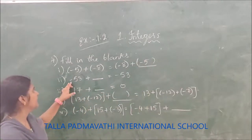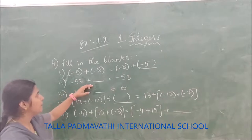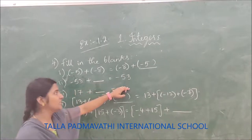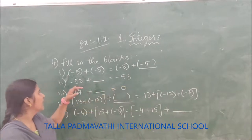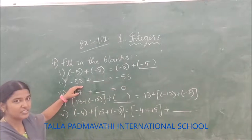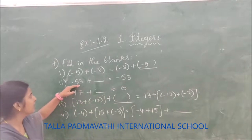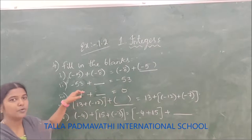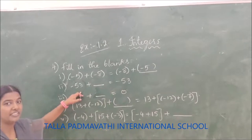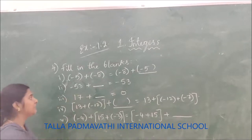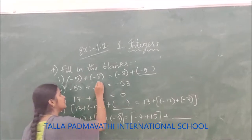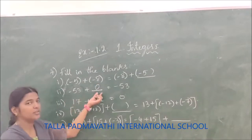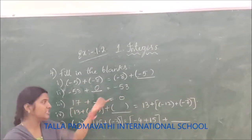The second one: minus 53 plus dash equals minus 53. You have to put an integer so that you get the same integer back. This is the property of additive identity. Additive identity is zero. So minus 53 plus 0 equals minus 53.